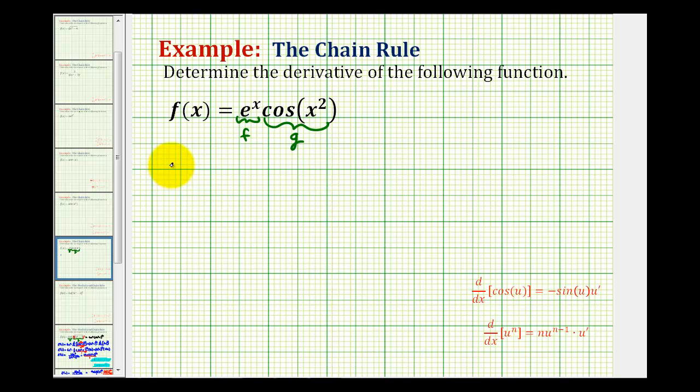Let's go ahead and write out the product rule without actually finding any derivatives so we can show our work. So we'll have the first function, e to the x, times the derivative of the second function, so the derivative of cosine x squared, plus the second function, which is cosine x squared, times the derivative of the first function, which is e to the x.